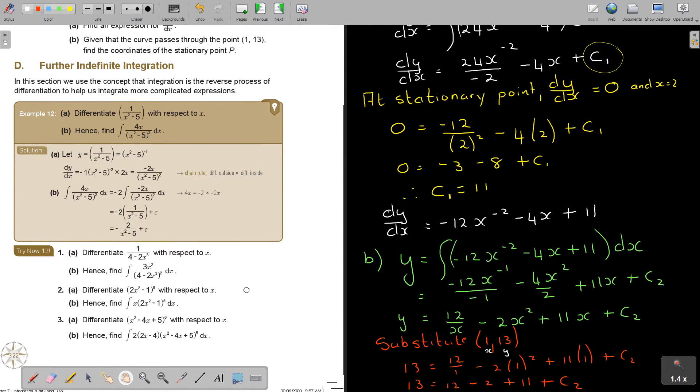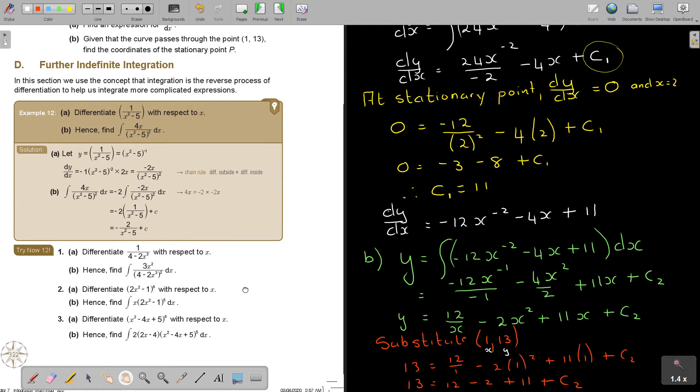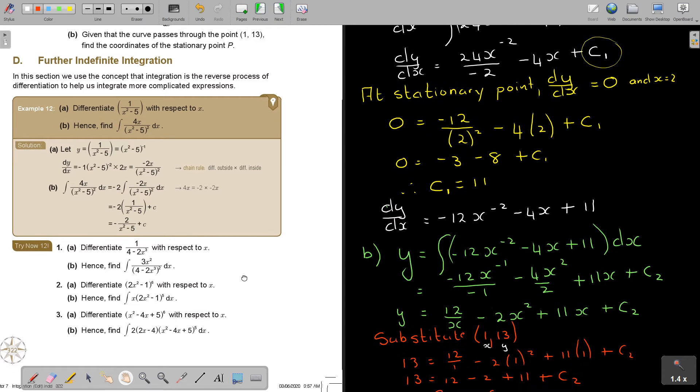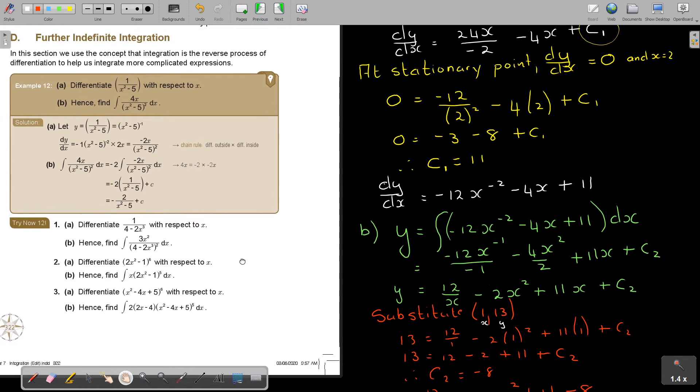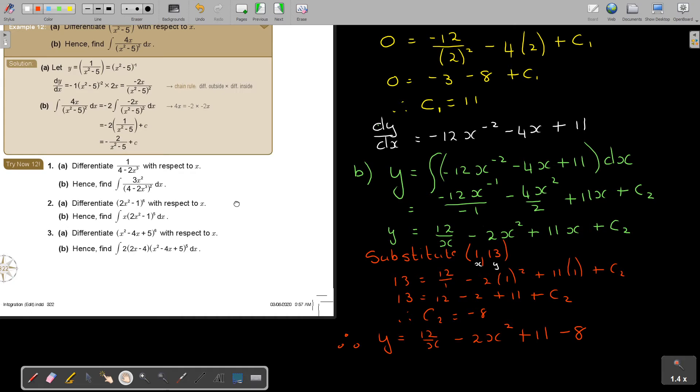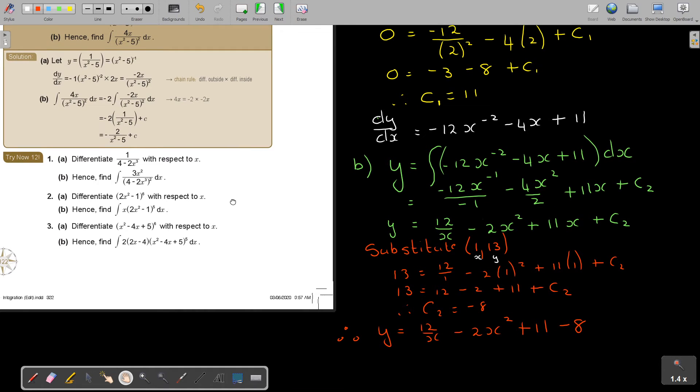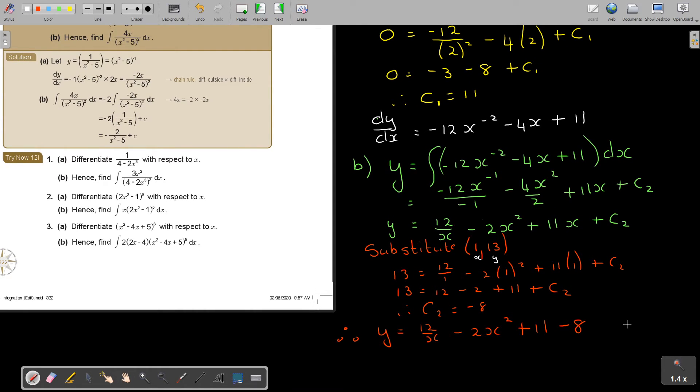I just have to quickly substitute x equals 2. So I say y is equal to 12 over 2 minus 2 times 2 squared plus 11 times 2 minus 8.